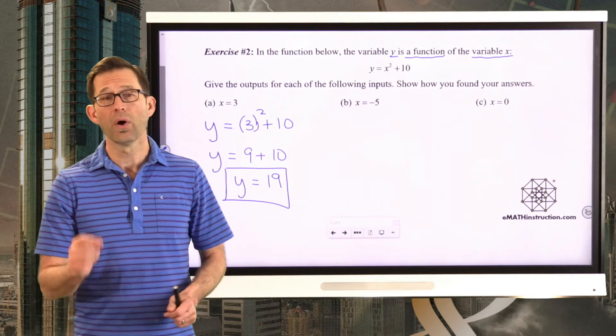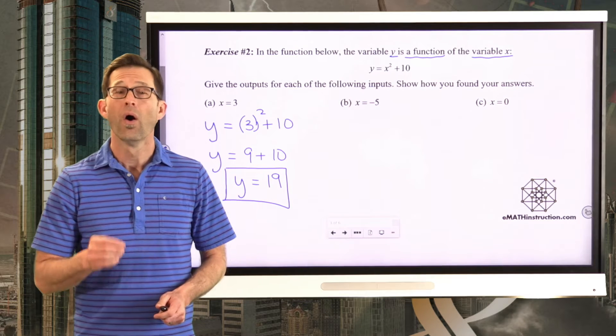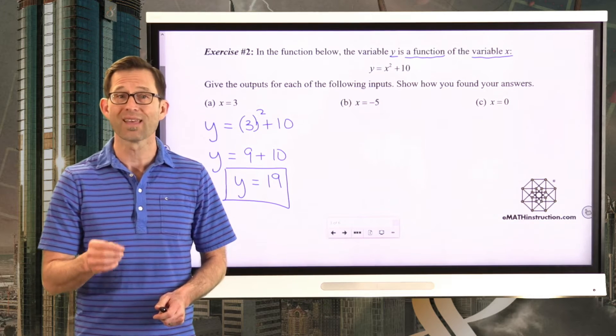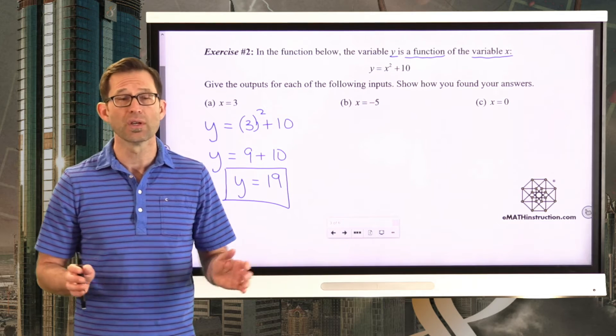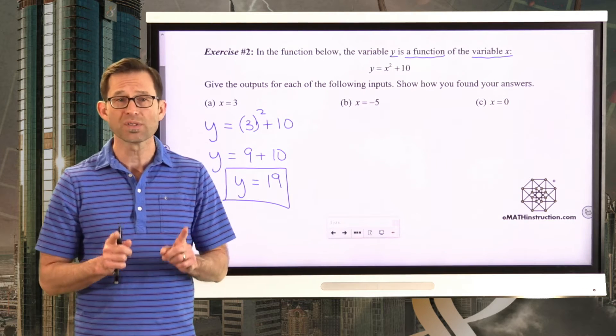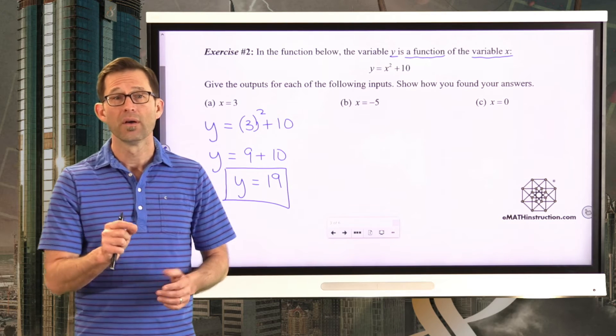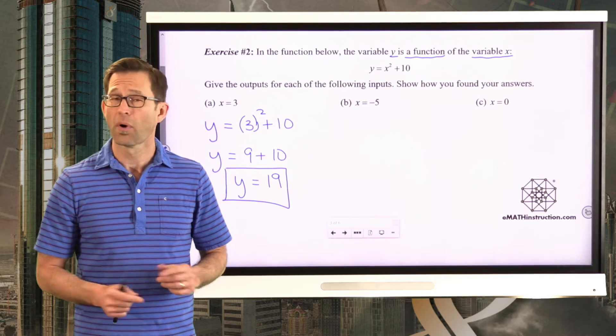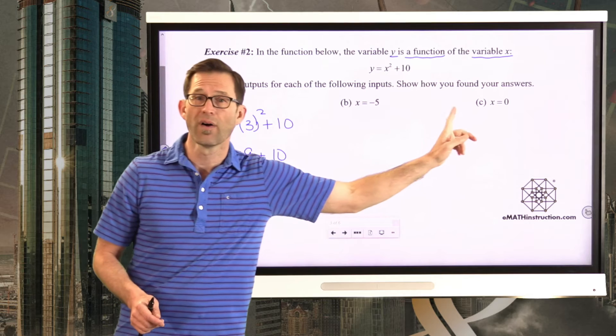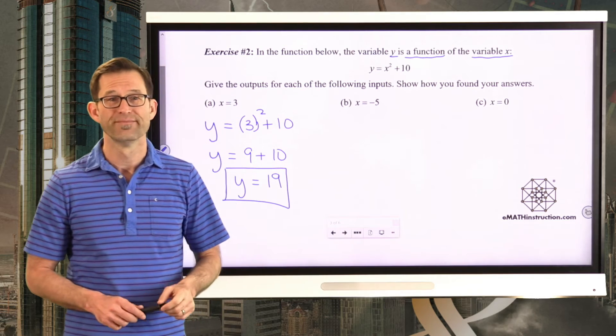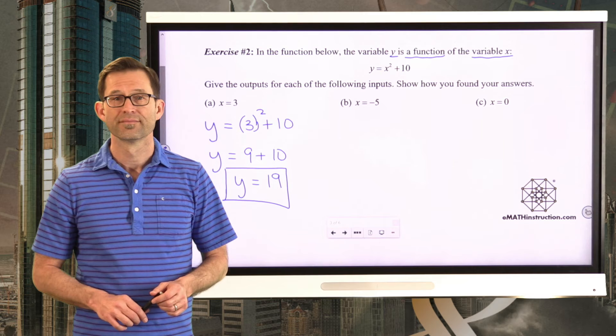Now, I can't promise you this, but in most conventional situations, when we have a function that involves the variables x and y, almost always the input is x and the output is y. Don't get me wrong, that could change in certain situations. But mostly, if the two variables are x and y, x is the input, y is the output. What I'd like you to do now is pause the video and figure out what the outputs are when the inputs are x equals negative 5 and x equals 0.